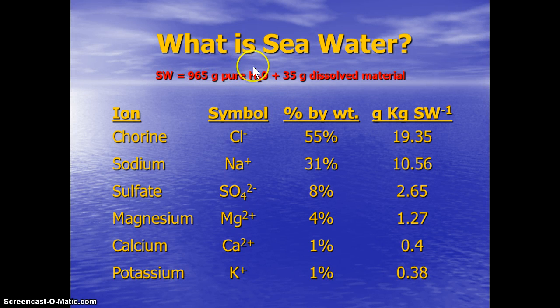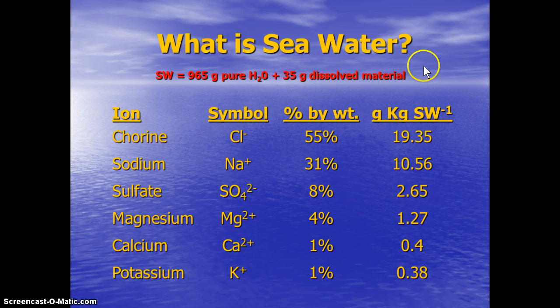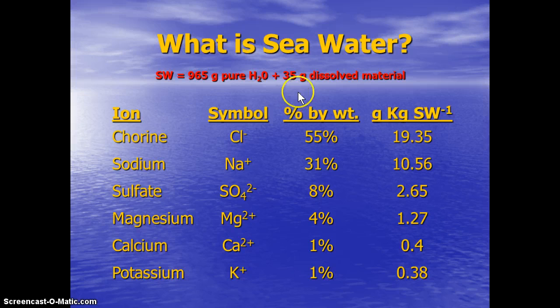Seawater is essentially, on average, made up of 965 grams of pure water plus 35 grams of dissolved salt ions. We call that parts per thousand, since 35 plus 965 is a thousand, so we say that average seawater is about 35 parts per thousand salty.